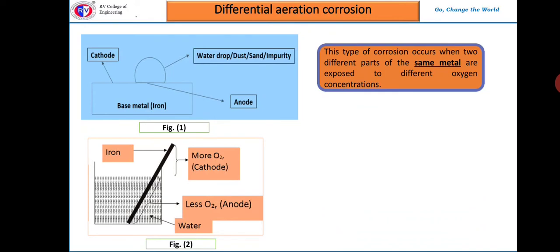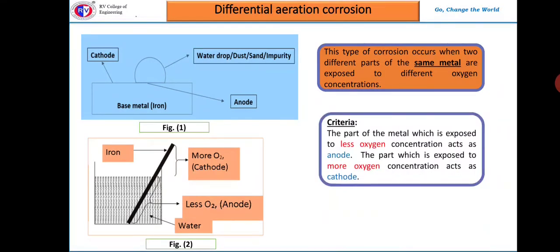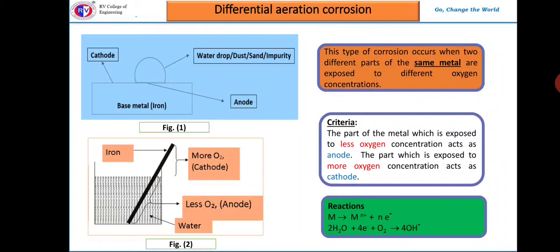A concentration cell develops with respect to oxygen, and as a result corrosion occurs. The part of the metal at the anode undergoes oxidation, whereas at the cathode, oxygen undergoes reduction. This type of corrosion occurs when a metal is exposed to different oxygen concentrations.